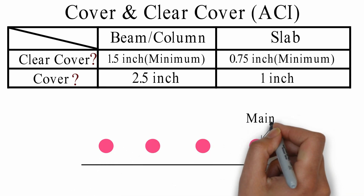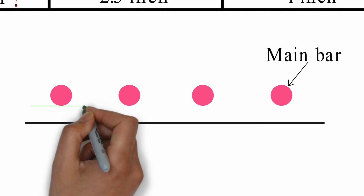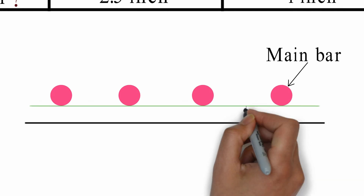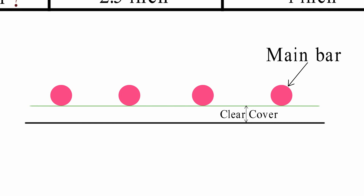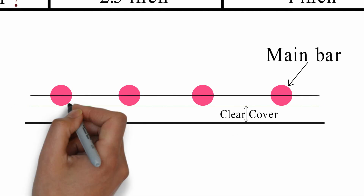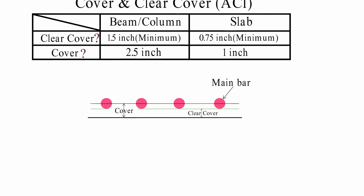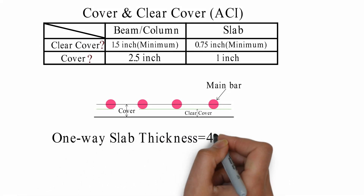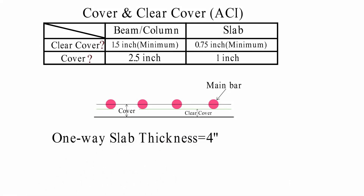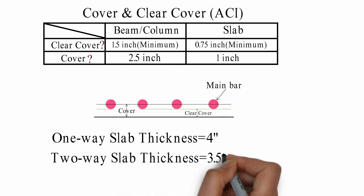For the main bar, the clear cover values apply: 1.5 inch minimum in standard conditions, and 2.5 inch minimum in exposed conditions.